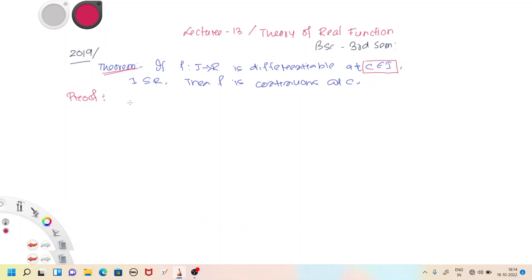Proof: Let's consider f from I to R is differentiable. We need to show what? We need to show the function is continuous at c belongs to I, which is a subset of R.